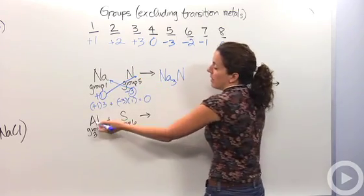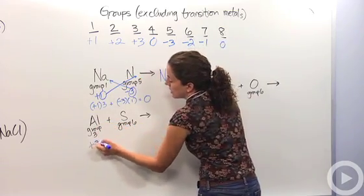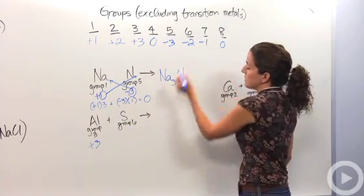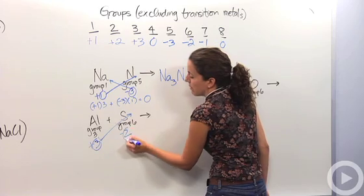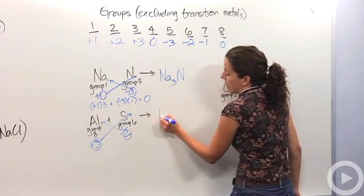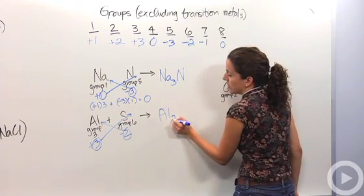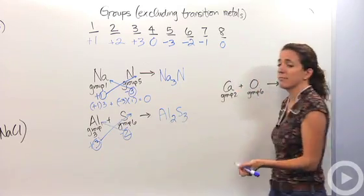So let's do aluminum. Aluminum's in group three, which means the plus three charge. Sulfur's in group six, which means the minus two charge. We're doing our trick, we're going to just exchange those numbers, making it Al2S3. Easy enough.